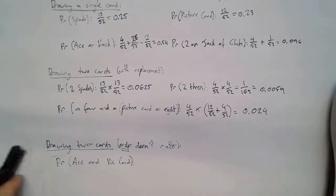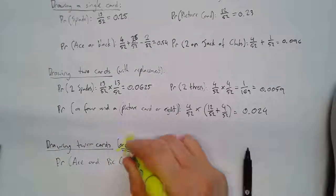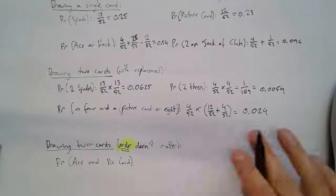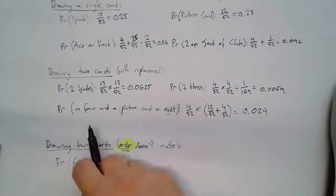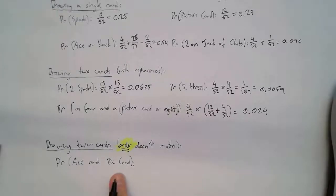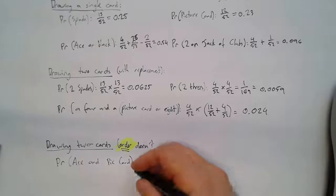Last one: drawing two cards where order doesn't matter — I've highlighted that word 'order.' Probability of an ace and a picture card. In previous examples the first card was a specific one. But where order doesn't matter, your first card could be an ace and your second a picture card, or your first card could be a picture card and your second an ace. Both are valid, so we write it down both ways with an OR.